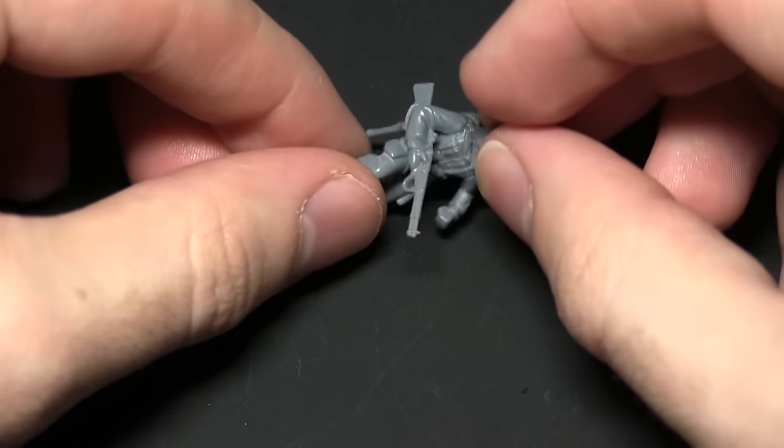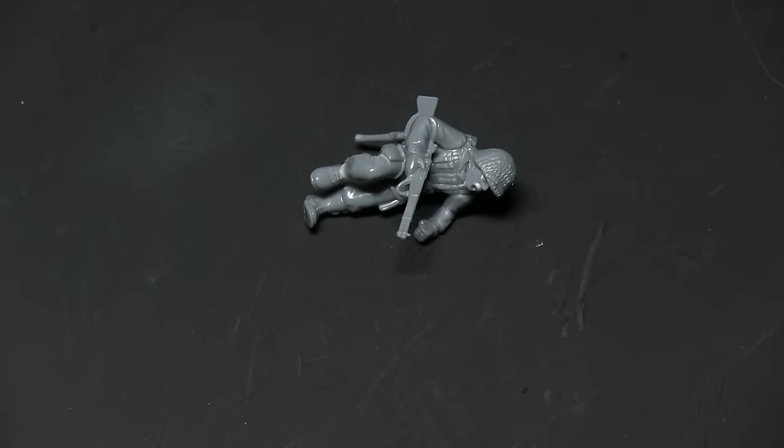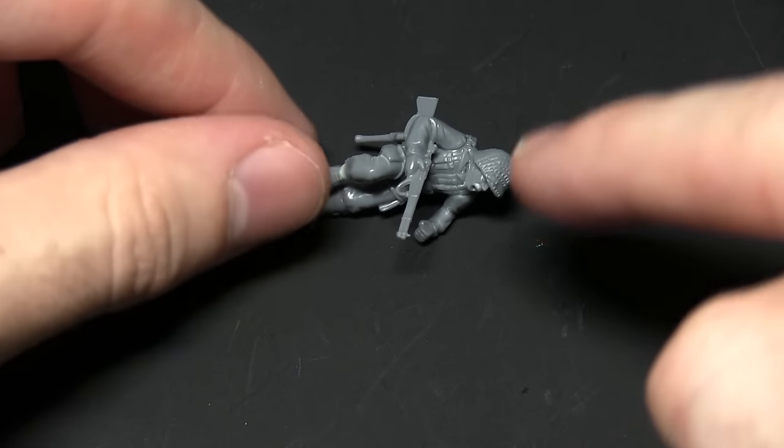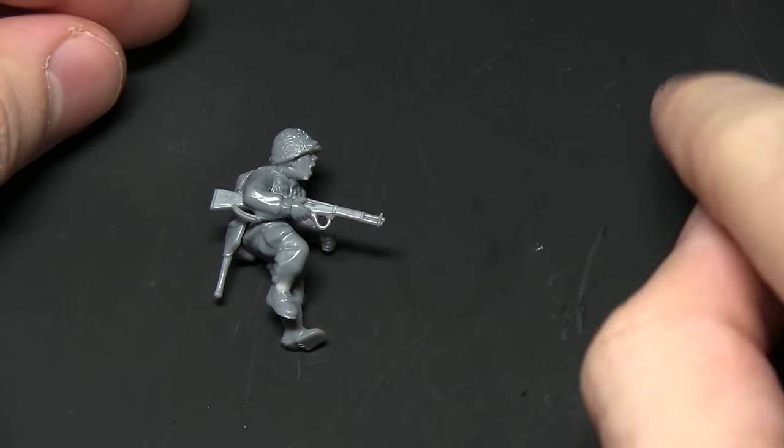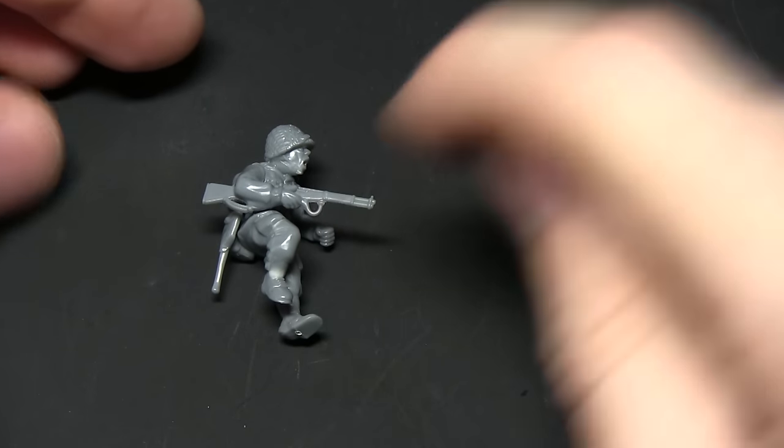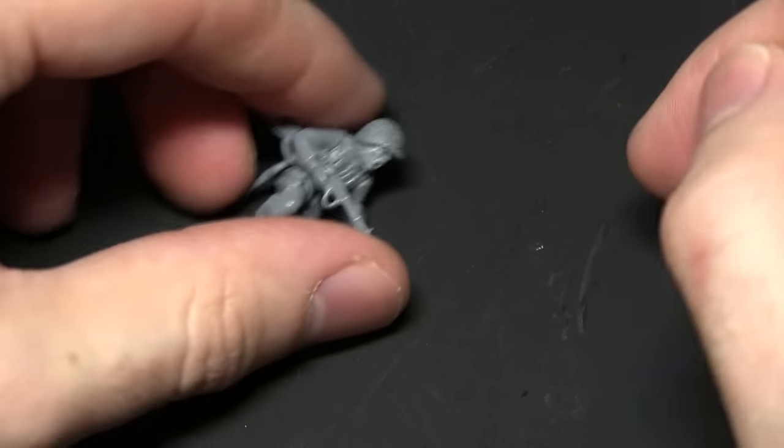So here we have the first loader. You can see I've got him in this almost prone position, looks like he's diving into action and shouting some orders to the gunner who will be placed in the centre of the base with the second loader on the right and this loader on the left. So let's move on to assembling the gunner.